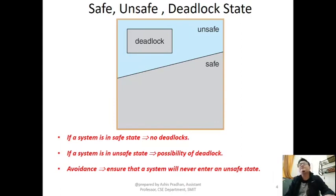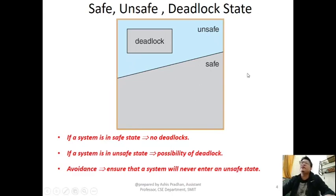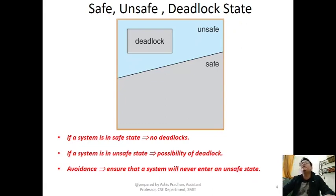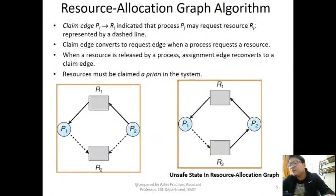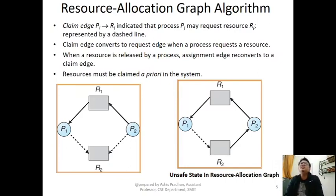That is the main idea about deadlock avoidance. When running the deadlock avoidance algorithm like the Banker's algorithm, if the system is in a safe state the resource can be granted; otherwise the request cannot be granted. It does not guarantee that an unsafe state will definitely lead to deadlock, but the OS will not take that chance. All unsafe states are not deadlock states, but all deadlock states are in an unsafe state.